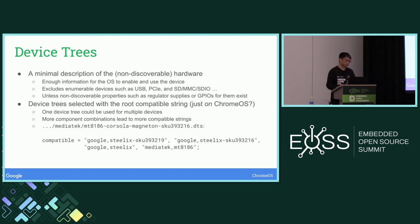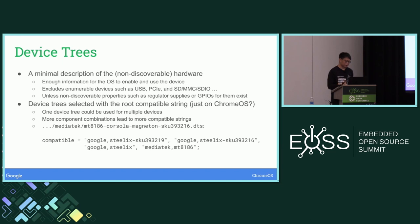In the device tree, every device node has a compatible string that basically identifies which component it is. However, for the root node, the compatible string doesn't do anything in Linux, but some bootloaders use it to identify what device the whole device tree is for. One device tree could be used for multiple devices if they look identical to Linux, and different SKUs can map to different compatible strings.